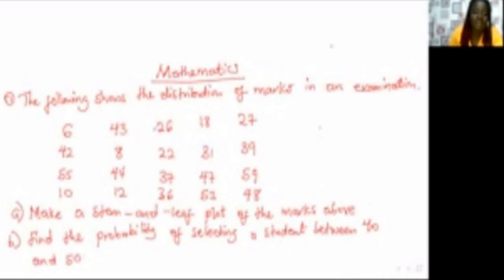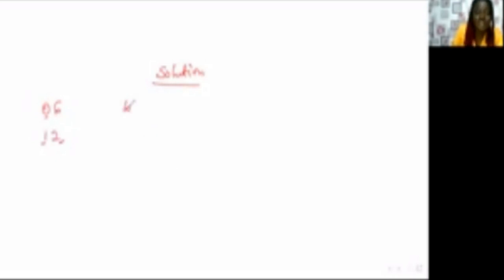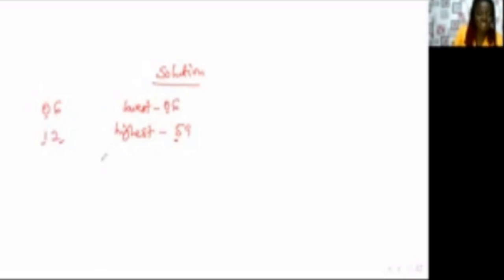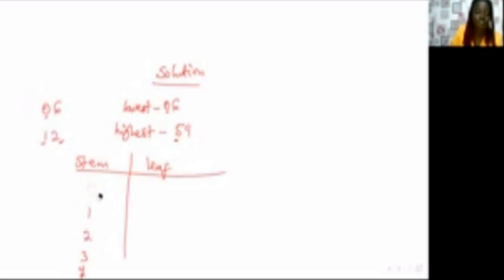What is the lowest mark? That is 6. And the highest mark is 59. The lowest mark is 6 and the highest is 59. For 59, the stem should be 5, and for 6, the stem will be 0. So our stem numbering goes from 0, 1, 2, 3, 4, and 5. This is going to be our stem, then we come to the leaf.